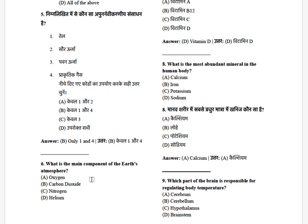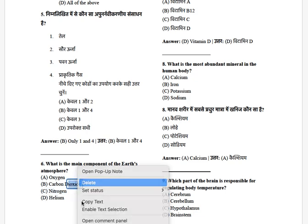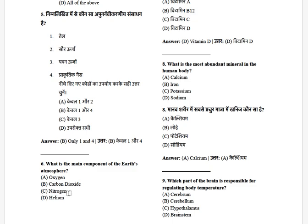What is the main component of Earth's atmosphere? The options are: oxygen, carbon dioxide, nitrogen, and helium. The answer is nitrogen — that is around 78%.